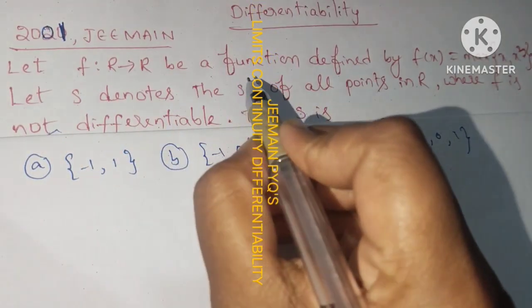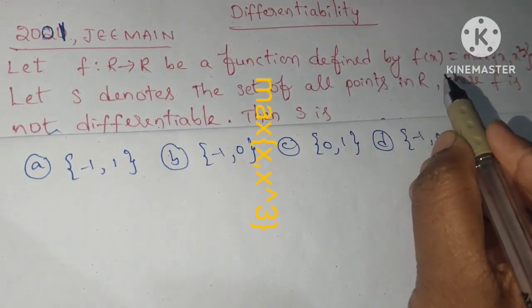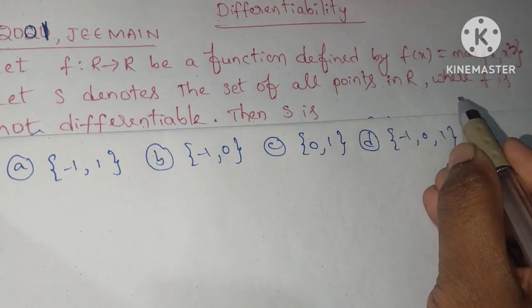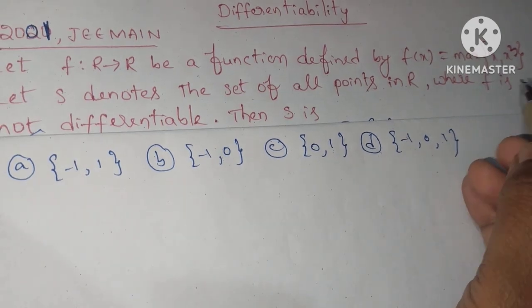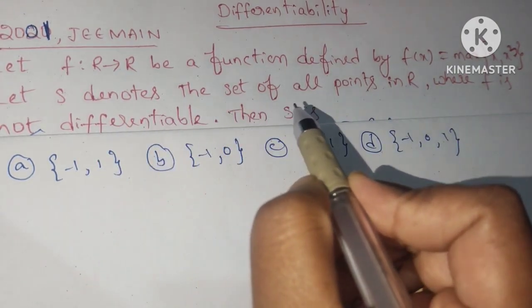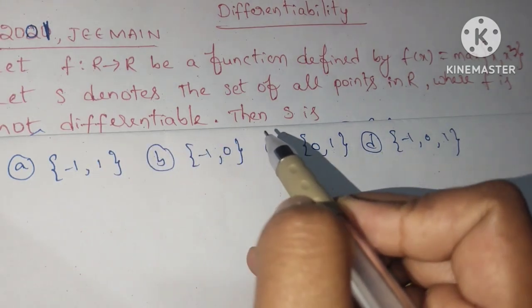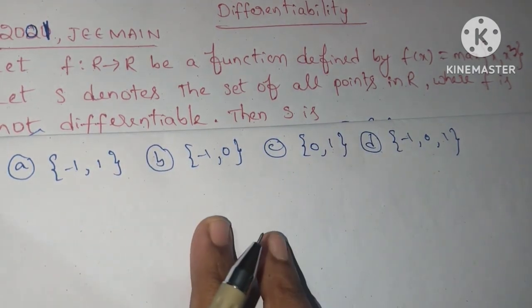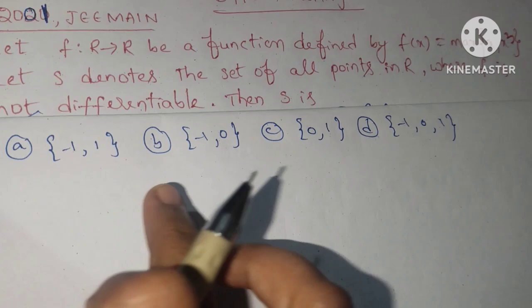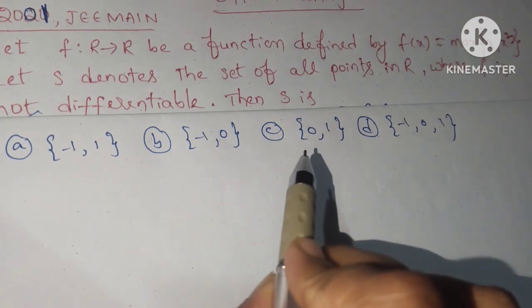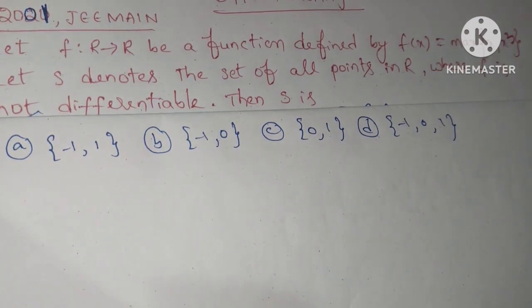Let f: R→R be a function defined by f(x) = max(x, x³). Let S denote the set of all points in R where f is not differentiable. Then S is: the options are (a) {-1, 1}, (b) {-1, 0}, (c) {0, 1}, and (d) {-1, 0, 1}.